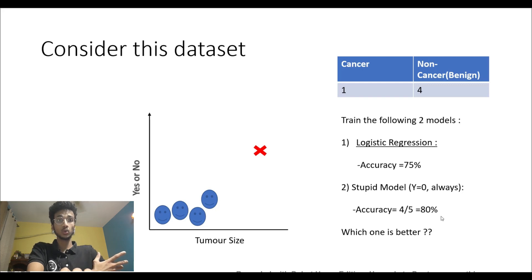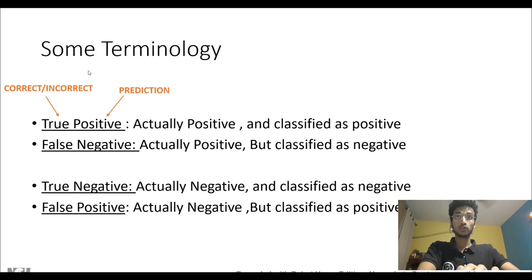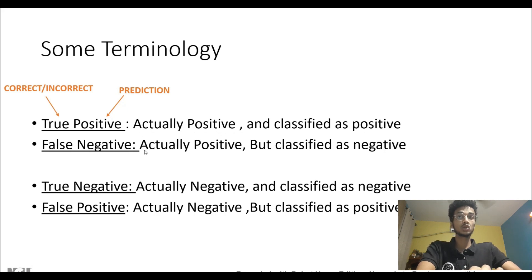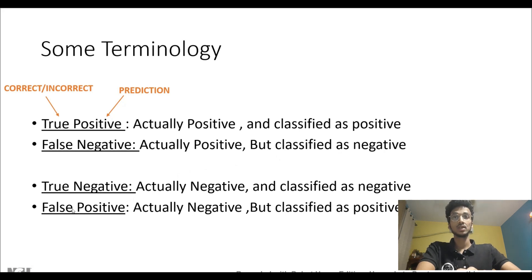To counter this problem we introduce some new terminology. First is true positive — a sample which was actually positive and also classified as positive. False negative is one which was actually positive but wrongly classified as negative. True negative is one which is actually negative and also classified as negative. False positive is one which was actually negative but has been classified wrongly as positive.